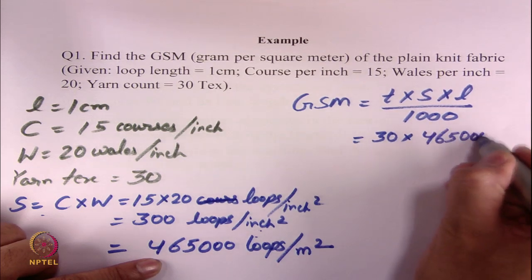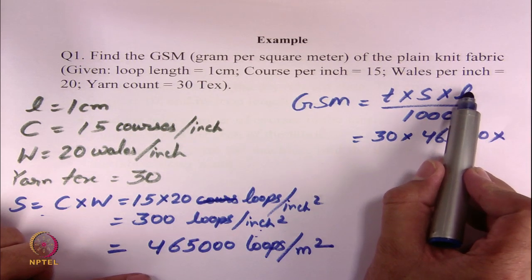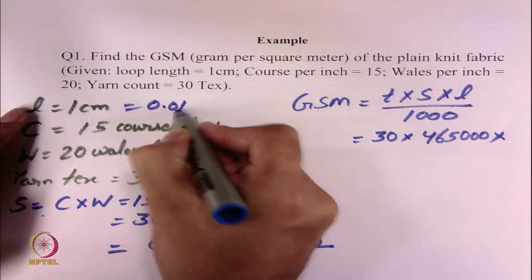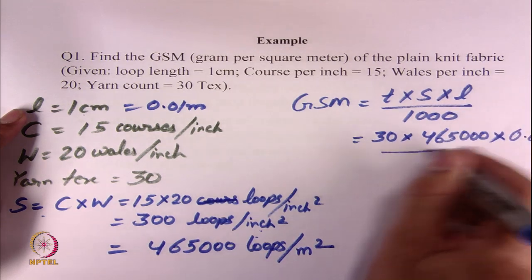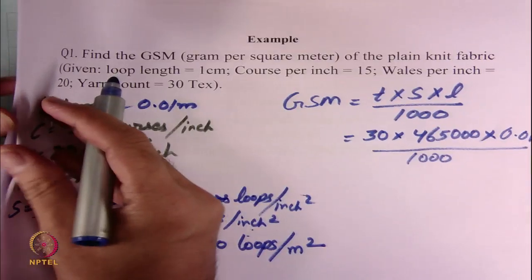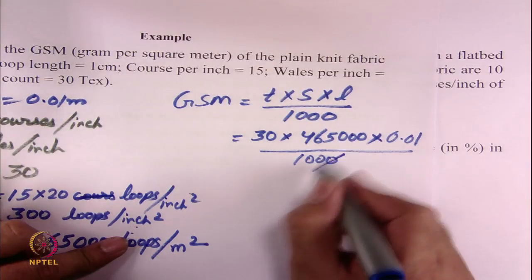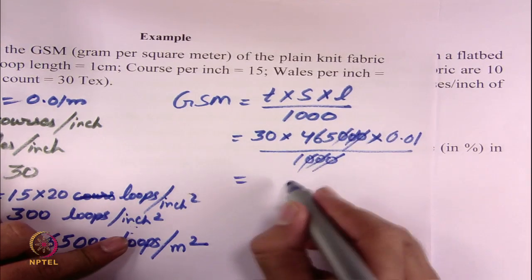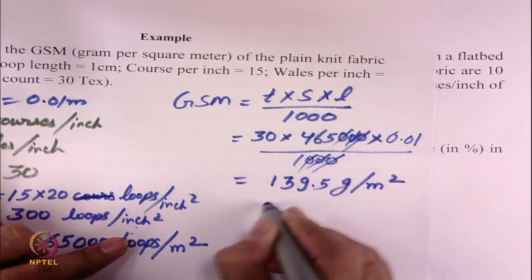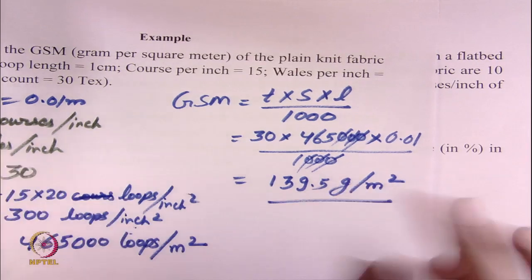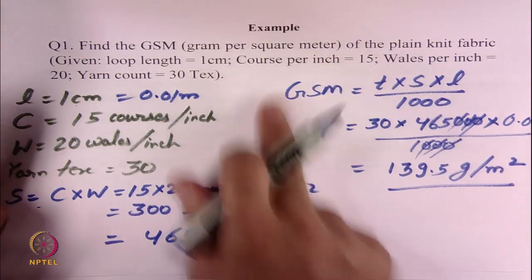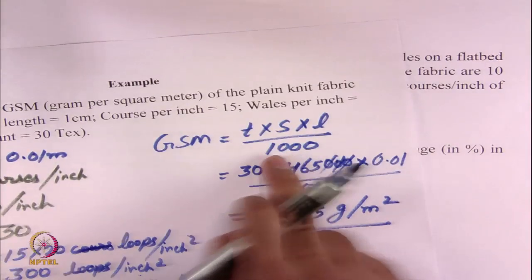Now the unit of L was in meters — L = 1 cm = 0.01 meters. So GSM = 30 × 465,000 × 0.01 / 1000. Solving this simple arithmetic gives approximately 139.5 grams per square meter. I hope you can see that once you know the fabric structural parameters, you can find its weight per square meter. This relationship is extremely valuable.